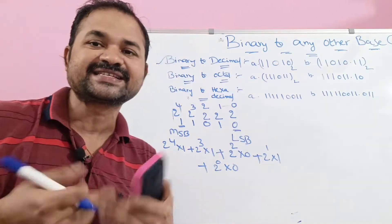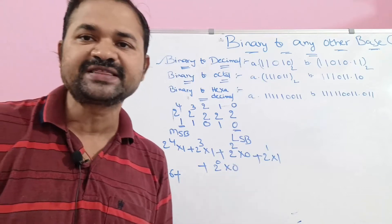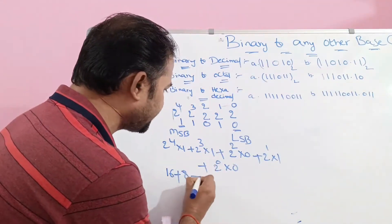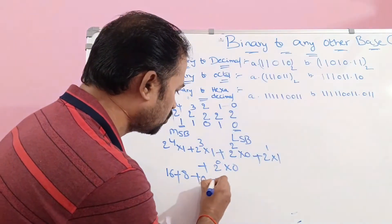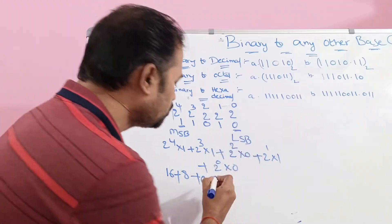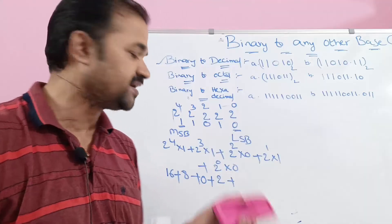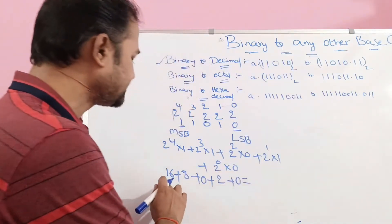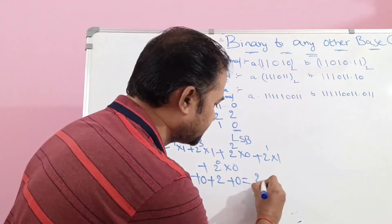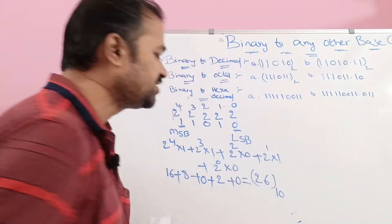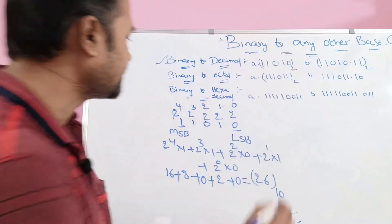Calculating: 2⁴ = 16, 16×1 = 16. 2³ = 8, 8×1 = 8. 2² = 4, 4×0 = 0. 2¹ = 2, 2×1 = 2. 2⁰ = 1, 1×0 = 0. Adding: 16 + 8 + 2 = 26. So 26 base 10 is the decimal equivalent of binary 11010.